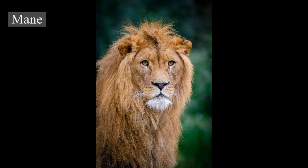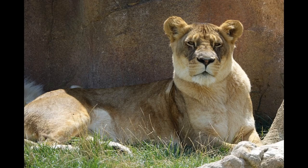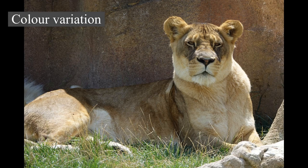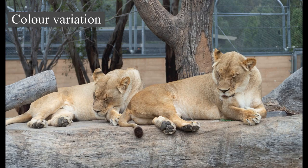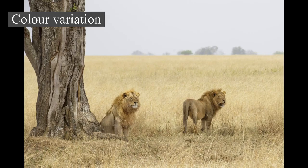Color variation. The white lion is a rare morph with a genetic condition called leucism, which is caused by a double recessive allele. It is not albino and has normal pigmentation in the eyes and skin. White lions have occasionally been encountered in and around Kruger National Park and the adjacent Timbavati private game reserve in eastern South Africa. They were removed from the wild in the 1970s, thus decreasing the white lion gene pool. Nevertheless, seventeen births have been recorded in five prides between 2007 and 2015. They have reportedly been bred in camps in South Africa for use as trophies to be killed during canned hunts.